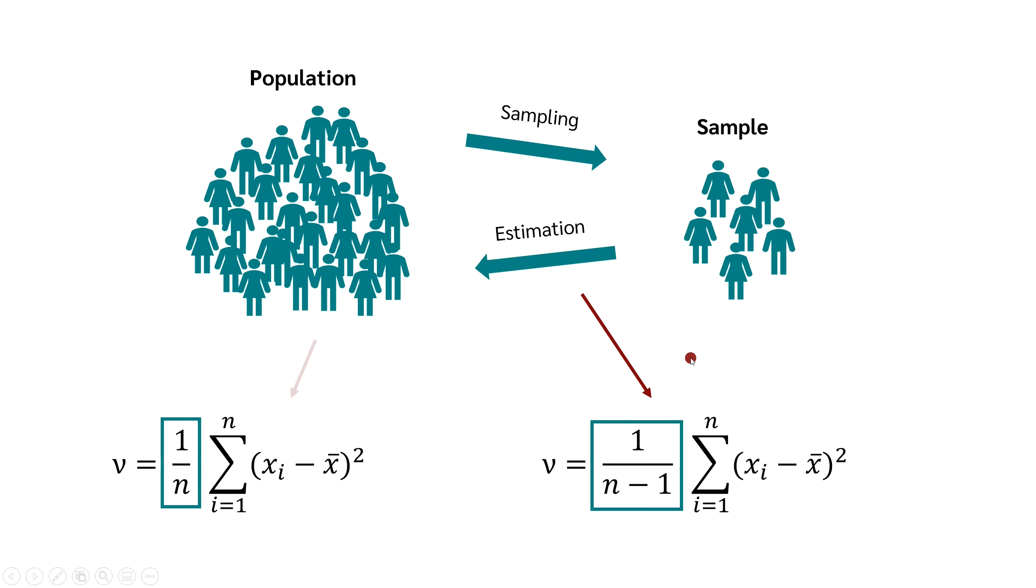If you created a questionnaire and your survey did not cover the whole population, you always use the formula on the right side. Likewise, if you have conducted a clinical study, then you also use the formula on the right to estimate the variance of the population. By default, the common statistics software solutions calculate the variance using the formula on the right side.